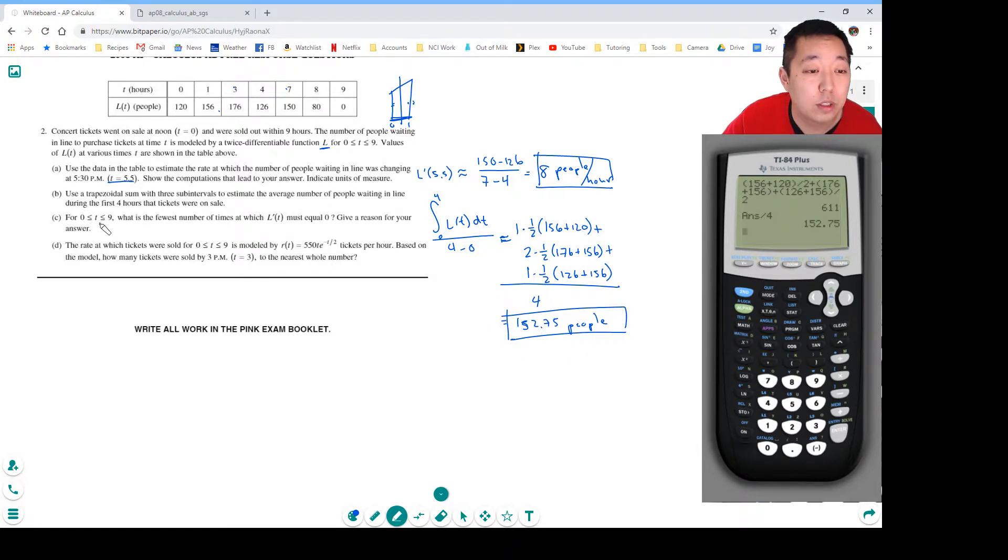For 0 less than or equal to t less than or equal to 9, what is the fewest number of times at which the derivative must equal 0? Give a reason for your answer.